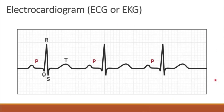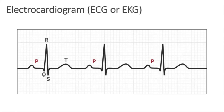This graph shows normal ECG waves. The P wave represents atrial systole — the atria will contract a few seconds after the P wave begins. The QRS wave represents ventricular systole, and the T wave represents ventricular diastole. The ventricles will relax a few seconds after the T wave is produced. A normal resting heart rate ranges from 60 to 100 beats per minute.